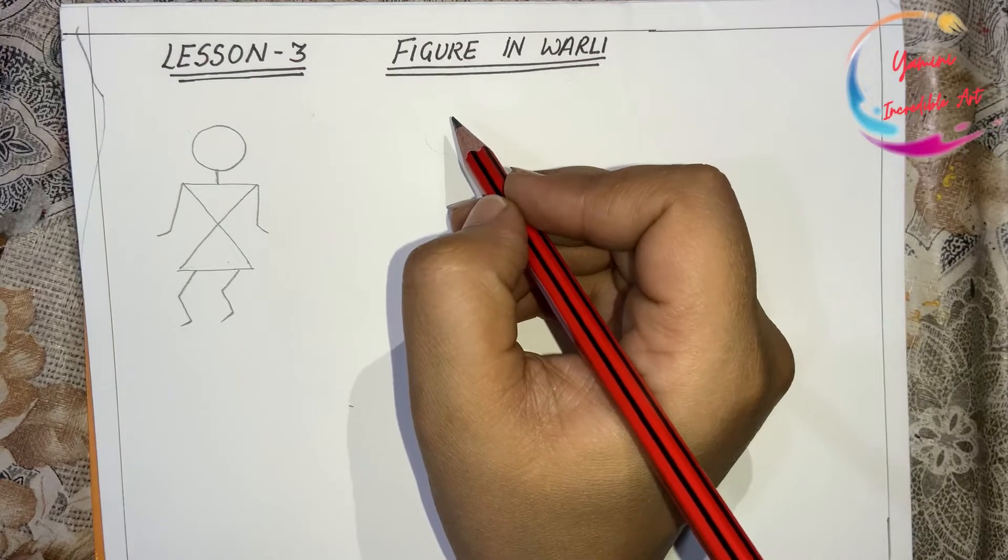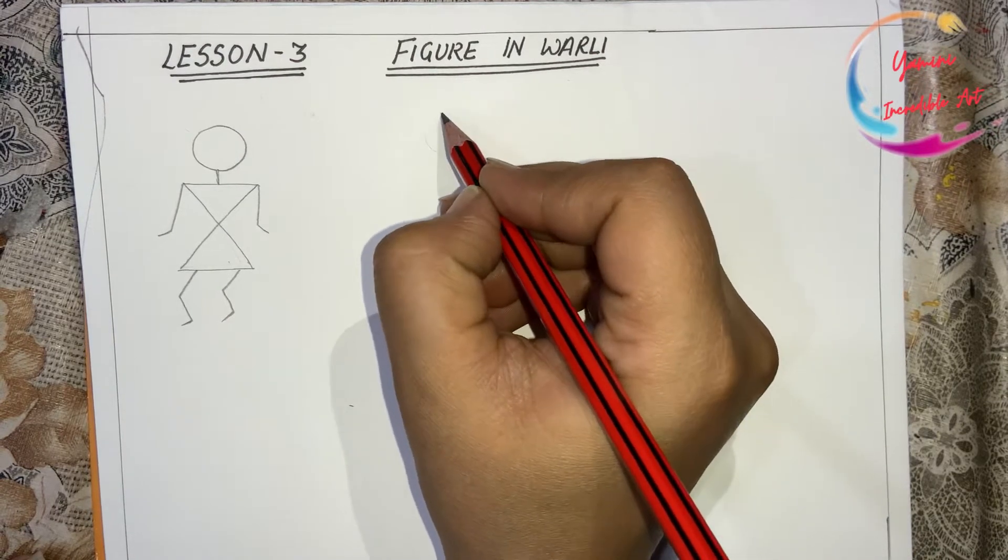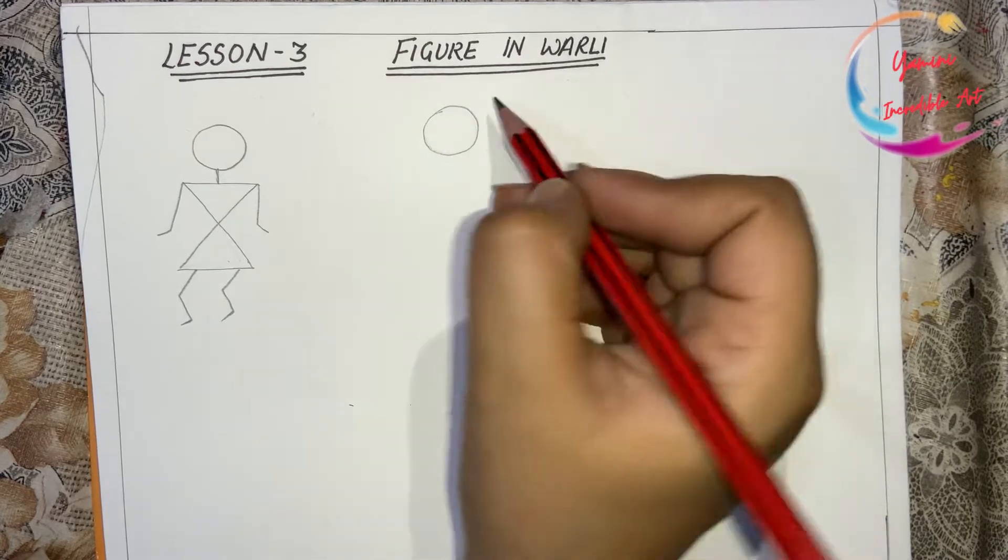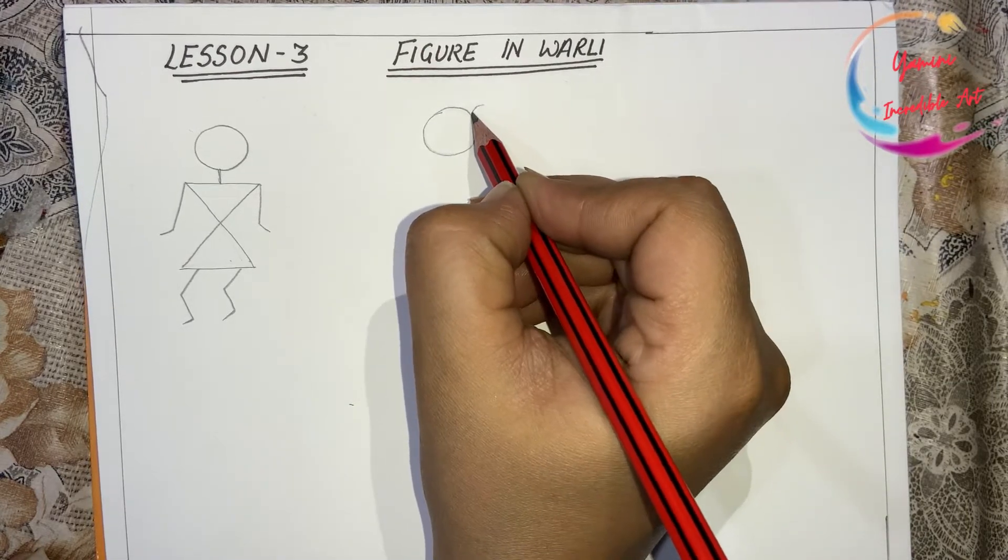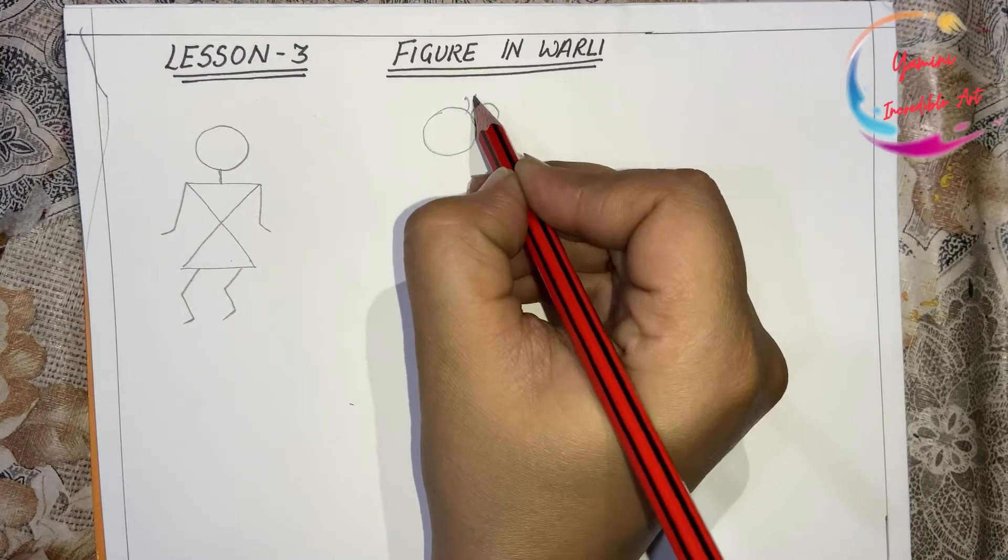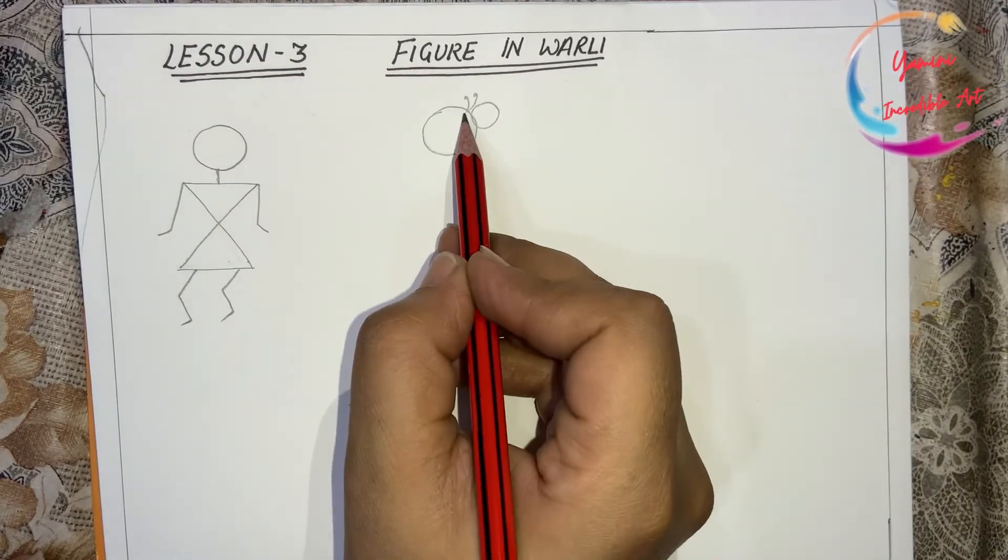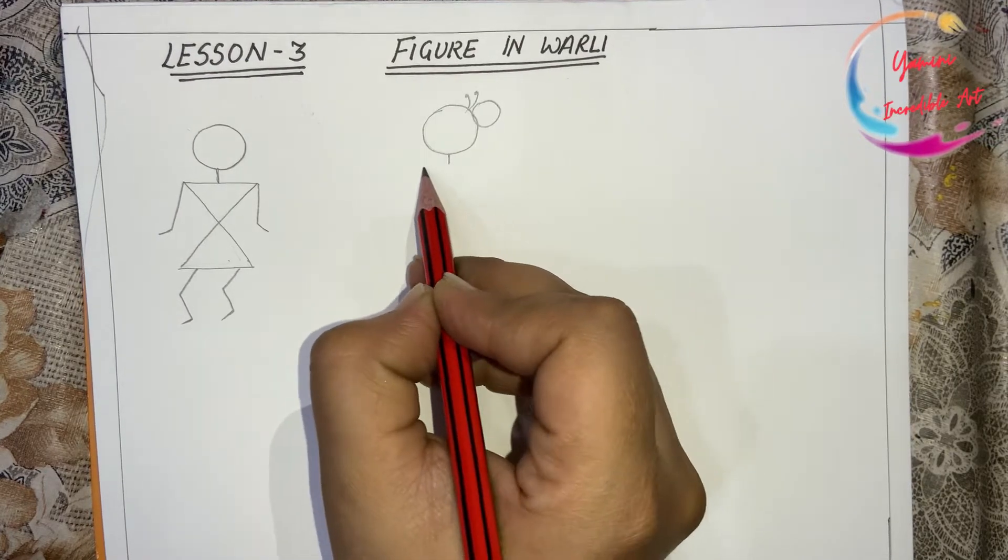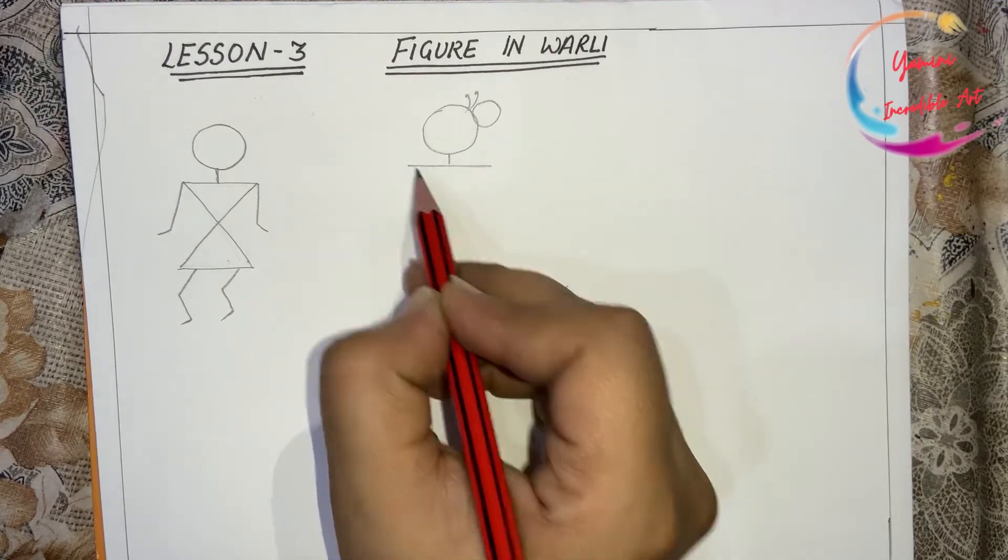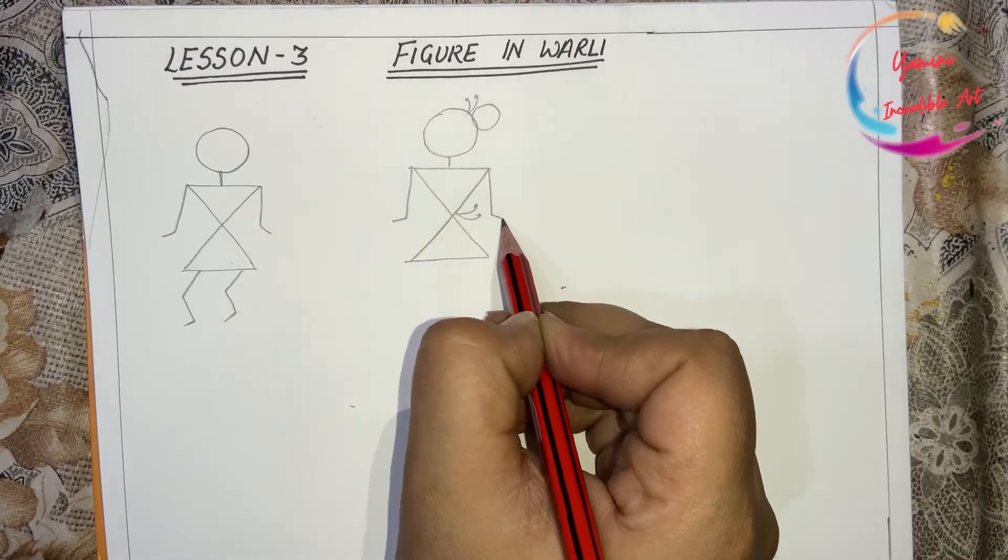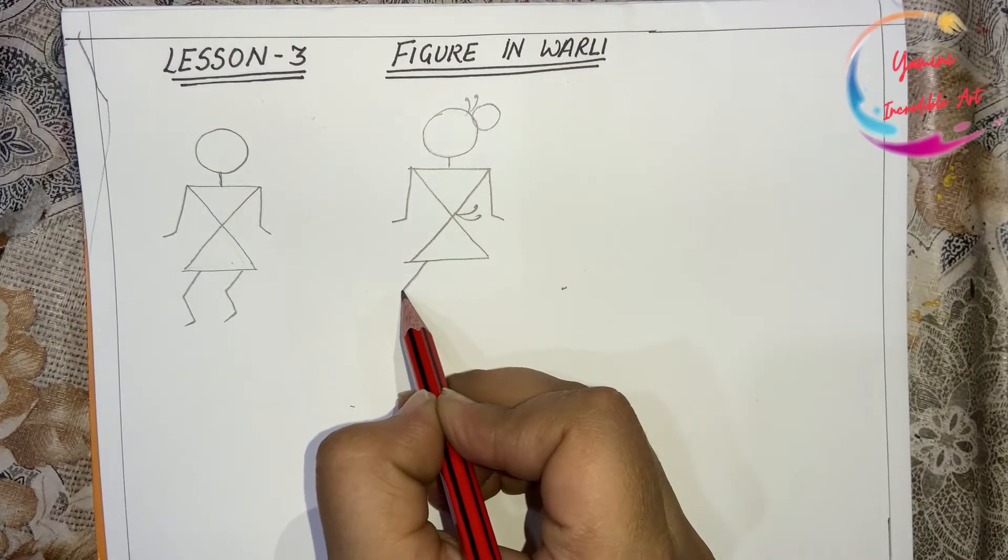Let's draw the woman figure. For that we have to make one circle and one more circle and one more circle. It will represent the juda. And two sticks over here, then make one small neck, again triangle, hands and the legs.